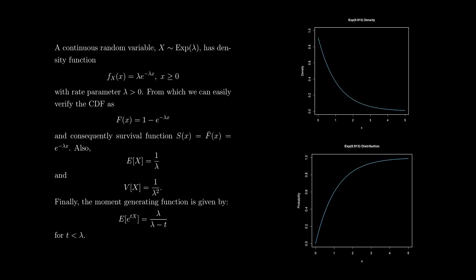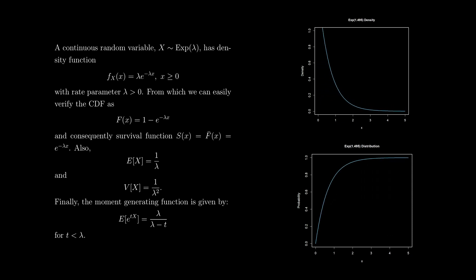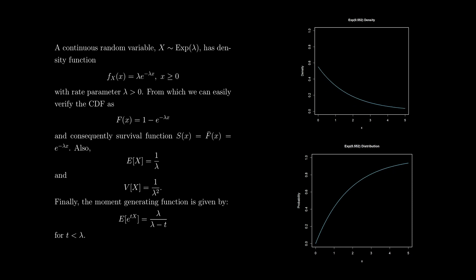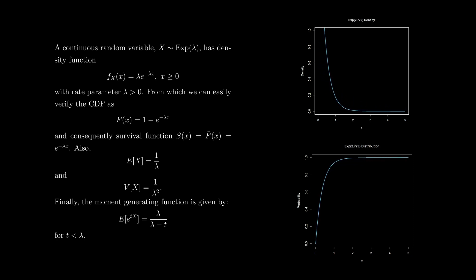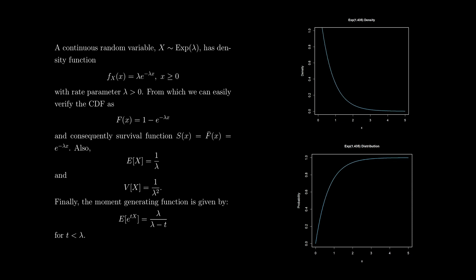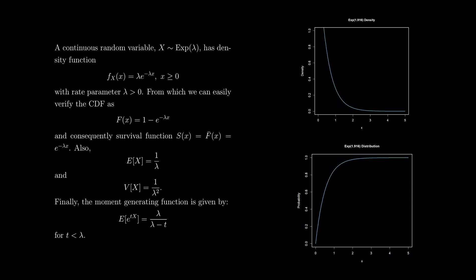From this, we can easily verify, as a simple integration exercise, that the CDF — or cumulative distribution function — is just given by 1 − e^(−lambda*x). Consequently, its survival function, which is just 1 minus the CDF, is just e^(−lambda*x). We can also easily verify that the mean of this distribution is 1 divided by lambda, and its variance is 1 divided by lambda squared — some easy properties to remember.